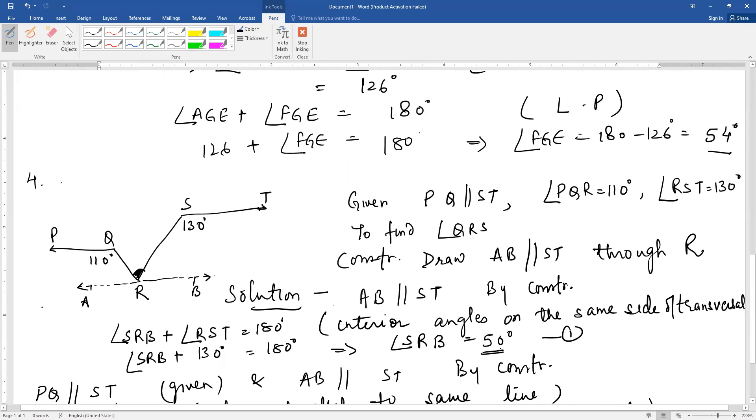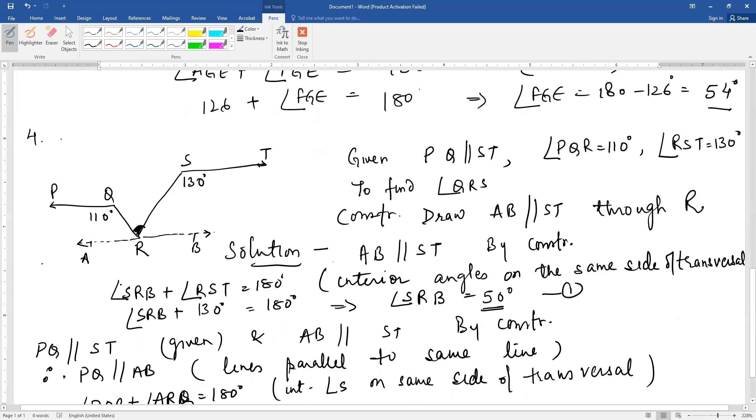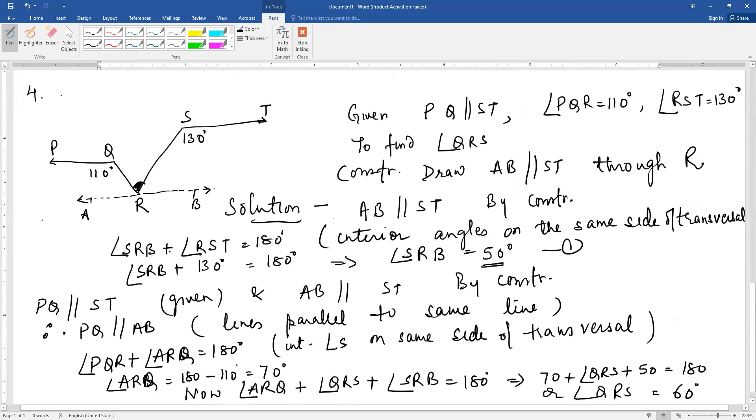Now since AB is parallel to ST by construction and PQ is parallel to ST by given information, that means two lines parallel to the same line are parallel to each other. Therefore PQ and AB are parallel. So angle PQR and angle ARQ are supplementary angles. 110 plus angle ARQ is 180, so angle ARQ comes out to be 70 degrees.